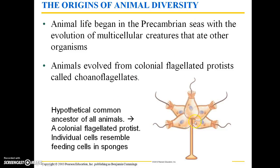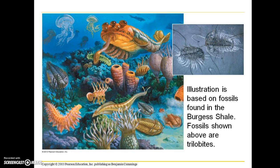This is a depiction of a hypothetical common ancestor of all animals. You'll see that there are several individual cells that make up this hypothetical creature and they have similarities to modern-day sponges, which are technically animals. This illustration is based on fossils found in the Burgess Shale, and the fossils here are trilobites, which are one of the most commonly found fossils.